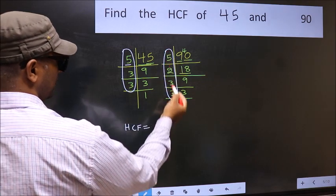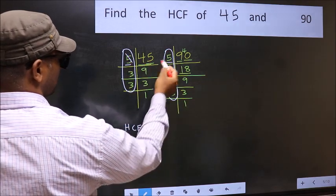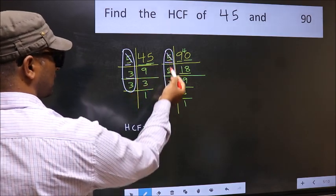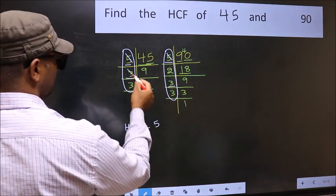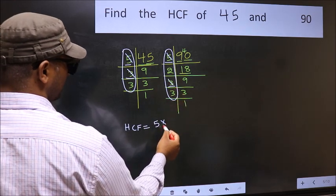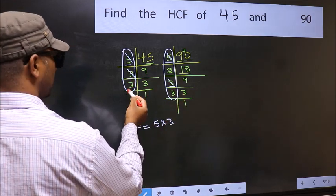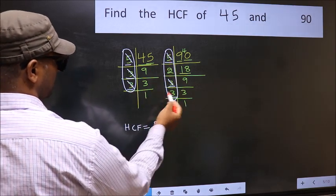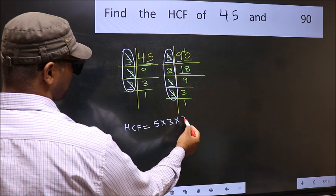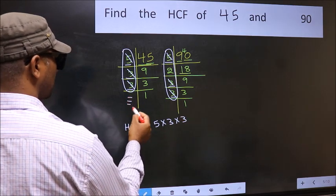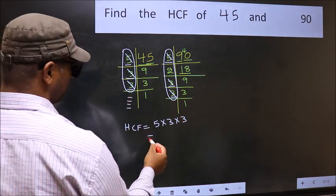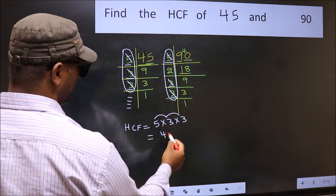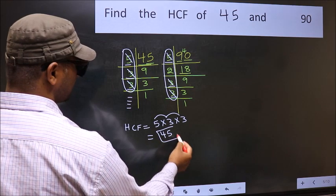Do we have 5 in 90's factorization? Yes. So cut 5 here. Next, do we have 3? Yes, so cut 3 here. Next, do we have another 3? Yes, so cut 3 here. No more numbers are left. So our HCF is 5 × 3 = 15, and 15 × 3 = 45. Our HCF is 45.